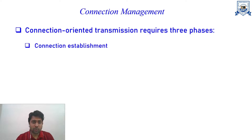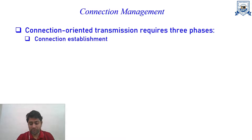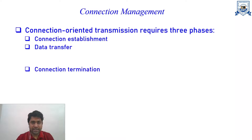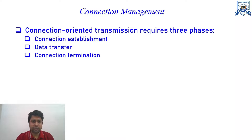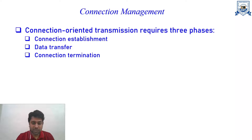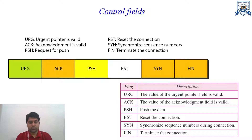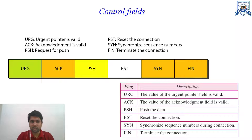Connection-oriented transmission requires three phases. In TCP, connection management is completed in three phases: first, connection establishment; then data transfer; and finally, connection termination. All three must be completed to achieve full data transmission in TCP.